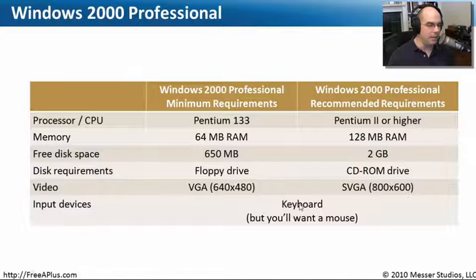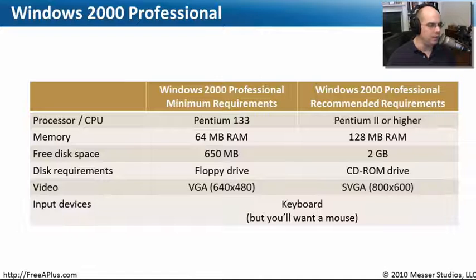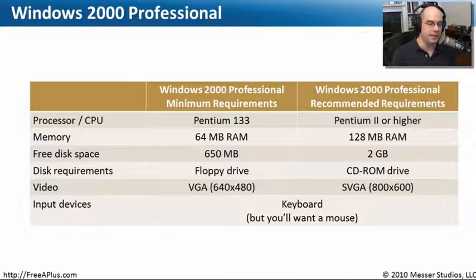The minimum for both of these is that you at least have a keyboard. You can use basically almost everything in Windows 2000 with a keyboard, but if you have a mouse it certainly works a lot better. Keep this in mind when approaching the idea of upgrading or setting up a Windows 2000 machine — these are the minimums you'll need.